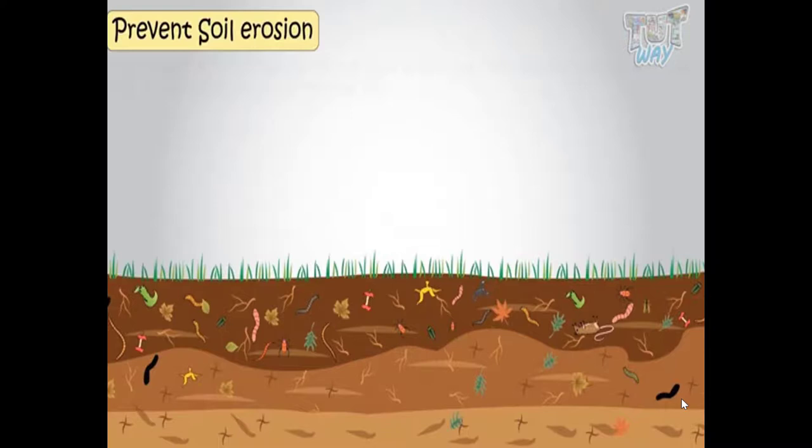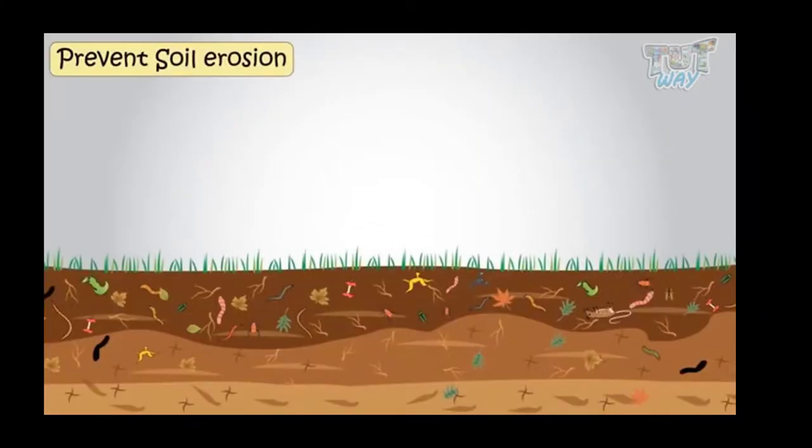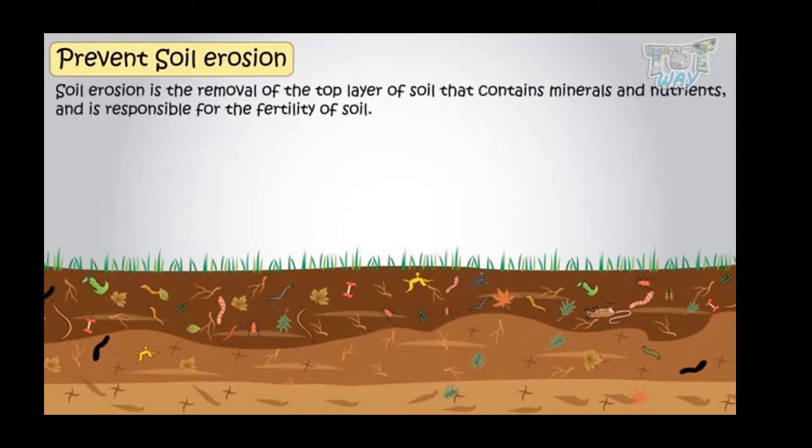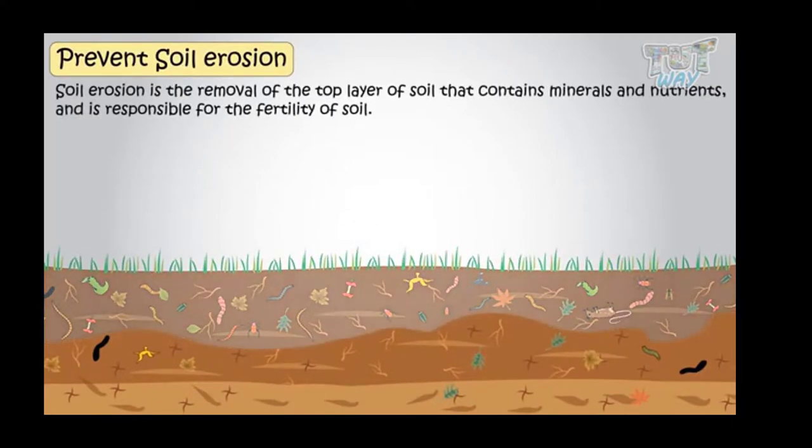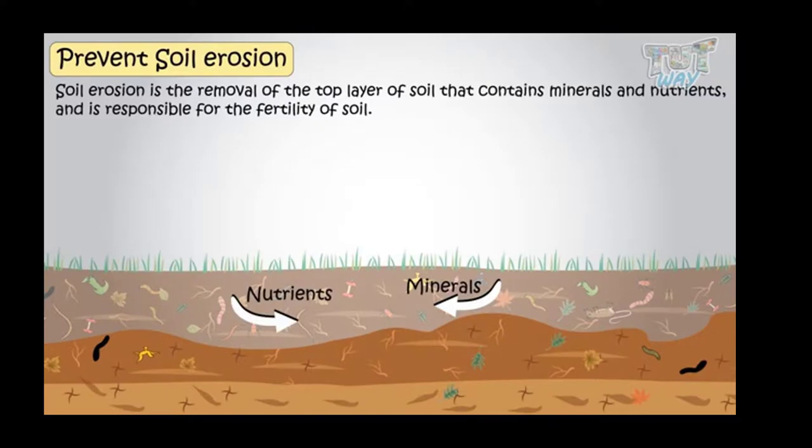Function number four is prevention of soil erosion. First, we know soil erosion is removal of the top layer of soil that contains the minerals and nutrients, and is responsible for the fertility of soil.